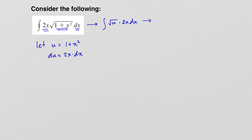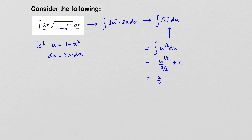When we do that, we end up getting the square root of u times du. This is a function that we know how to take the antiderivative of. We can rewrite this as u to the 1 half du, and using the power rule for antiderivatives and then simplifying, we end up with 2 thirds u to the 3 halves plus c.